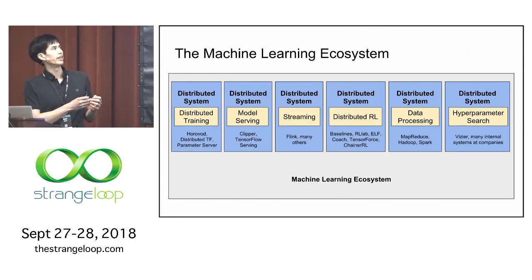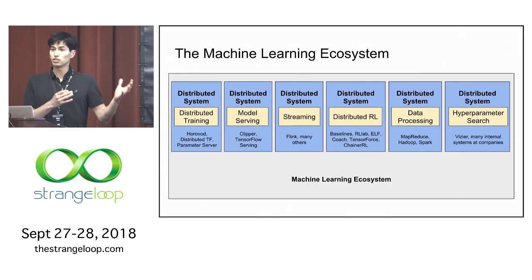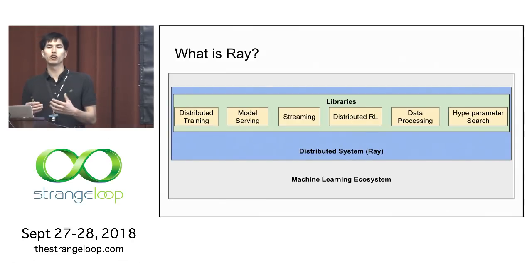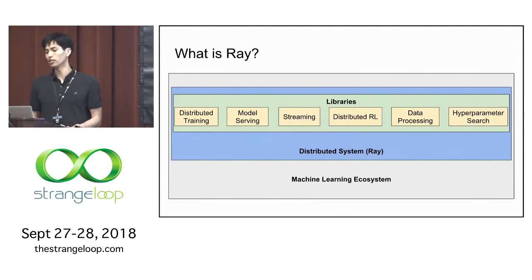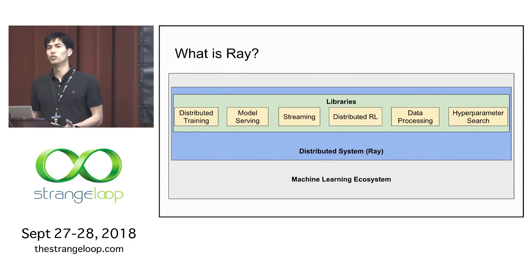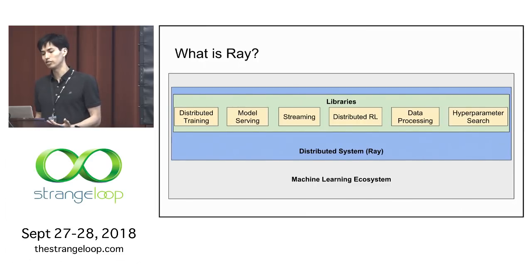What we're working on is reimagining all of these components, which today are standalone systems, as libraries on top of a single distributed system. We're building Ray as the underlying distributed system, and also building libraries on top that support the different components of the machine learning lifecycle. The exciting potential comes from enabling applications that integrate all of these different components together, enabling new things that are difficult to do today.